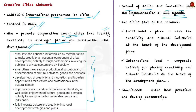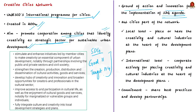The SDG goal related to cities is Goal 11 — Sustainable Cities and Communities — which aims to make cities more inclusive, safe, resilient, and sustainable. Target 11.4 is to strengthen efforts to protect and safeguard the world's cultural and natural heritage. But the Creative Cities Network objective is not confined to just one goal. For example, cities of literature aim to ensure freedom of expression and literacy for all, in line with SDG 4 on quality education.